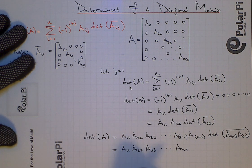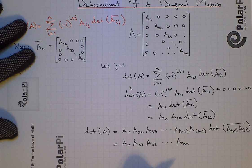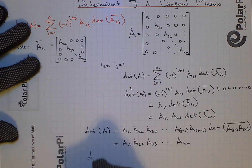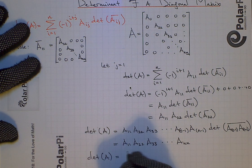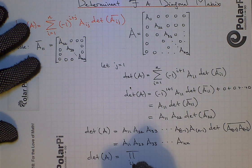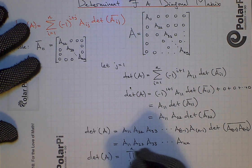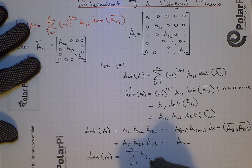So if you really like, we could do one more and write it a bit more succinctly as this. The product over i's, i equal one to n of Aii. There it is.